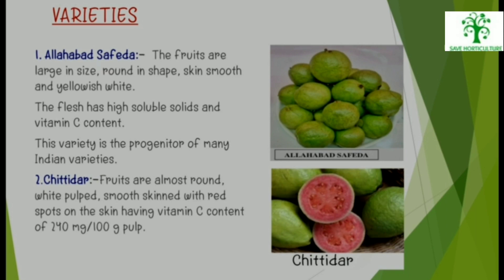Varieties: Some of the varieties of Guava are as follows. 1. Allahabad Safeda: The fruits are large, round, have smooth skin and are yellowish-white in colour. The flesh has high soluble solids and Vitamin C content. This variety is the progenitor of many Indian varieties.